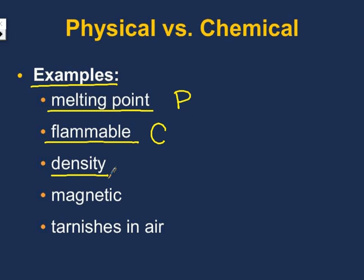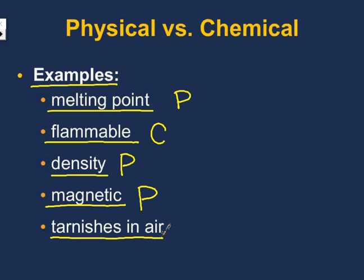Let's look at density. Whether you have a lot of stuff in a given space or not so much stuff in a given space, do you still have the same thing? Yes, it's still the same substance, so that is a physical property. If something is magnetic, are you changing that substance from one to another? No, so that would be a physical property. If something tarnishes in air — if it's exposed to oxygen, it is actually reacting with that oxygen and is no longer the same substance. Rust combines with oxygen and water in the air and turns that metal into a brand new substance, so that would be a chemical property.